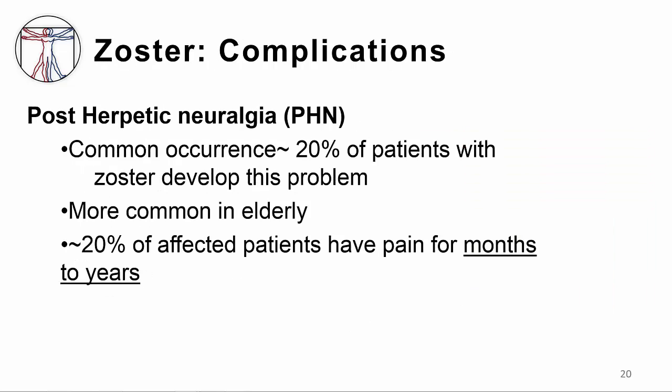Post-herpetic neuralgia (PHN) is a major complication related to zoster, occurring in approximately 20% of patients. The pain of PHN may be sharp, burning, throbbing, or stabbing. The skin may be unusually sensitive to even the lightest touch — such as clothing, bedsheets, the smallest breeze, or changes in temperature. Pain is thought to be due to inflammation triggered by viral replication, leading to nerve damage and increased sensitivity of pain receptors, and can last months to years. Reactivation in immunocompromised hosts can result in disseminated disease not isolated to the dermatome.